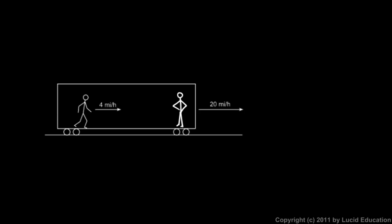But if you're standing out here on the tracks, or let's say you're standing out here beside the tracks, not on the tracks. So here you are, and you're watching the train approach. Now, how fast is this man moving relative to you here?